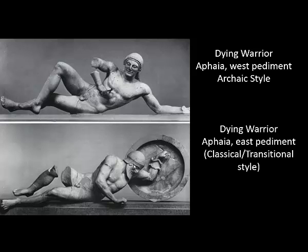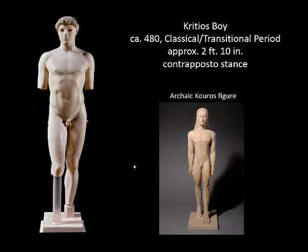Let's look at more examples. This is another great comparison — a similar situation of a young nude male from the archaic period, and then we have our Kratos boy from the classical transitional period. We'll notice that typical archaic features are no longer present in the classical transitional style. We no longer have the braided hair, and we do not have the archaic smile.